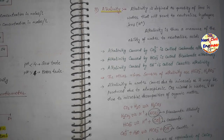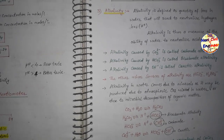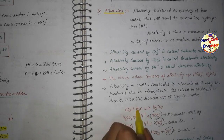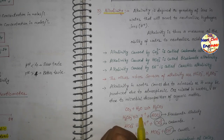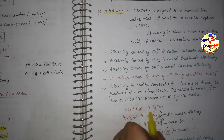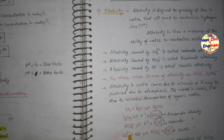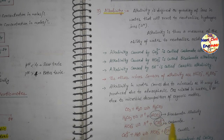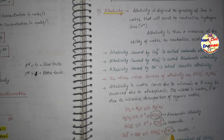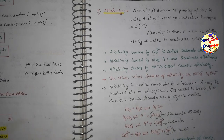Important chemical reactions in alkalinity: CO₂ + H₂O ⇌ H₂CO₃ (carbonic acid). Then H₂CO₃ ⇌ H⁺ + HCO₃⁻ — this gives bicarbonate alkalinity. Further, HCO₃⁻ ⇌ H⁺ + CO₃²⁻ — this gives carbonate alkalinity. Then CO₃²⁻ + H₂O → HCO₃⁻ + OH⁻ — this gives caustic alkalinity. These are the three types: carbonate, bicarbonate, and caustic alkalinity.